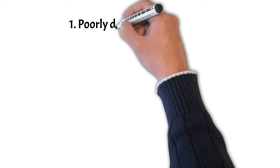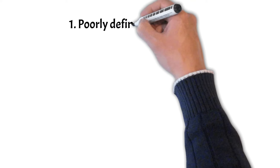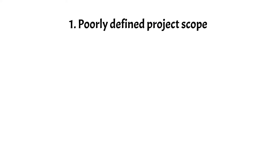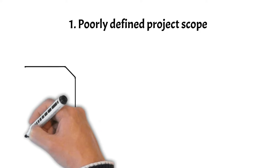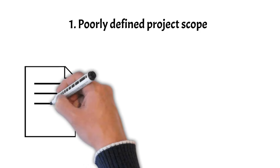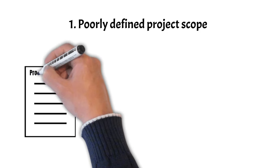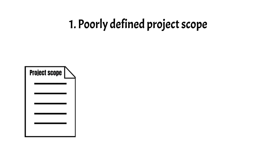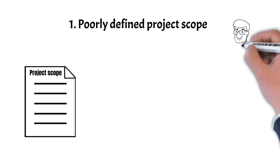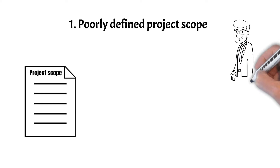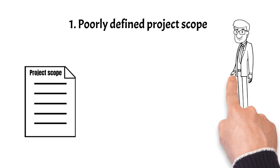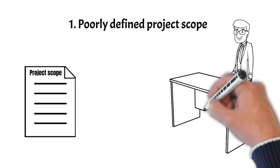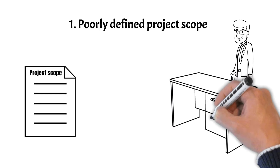Pitfall 1: Poorly defined project scope. Our first pitfall is starting a project without a clearly defined scope. When the project scope lacks clarity and specificity, it becomes challenging to establish clear objectives, deliverables, and to meet expectations. As a result, teams may find themselves continuously accommodating new requirements, leading to scope creep.